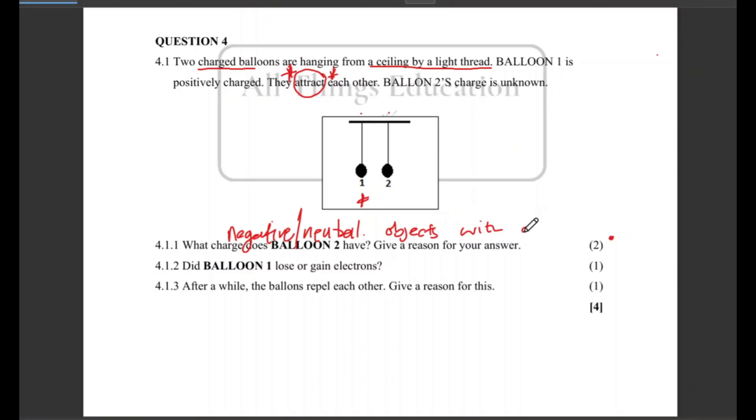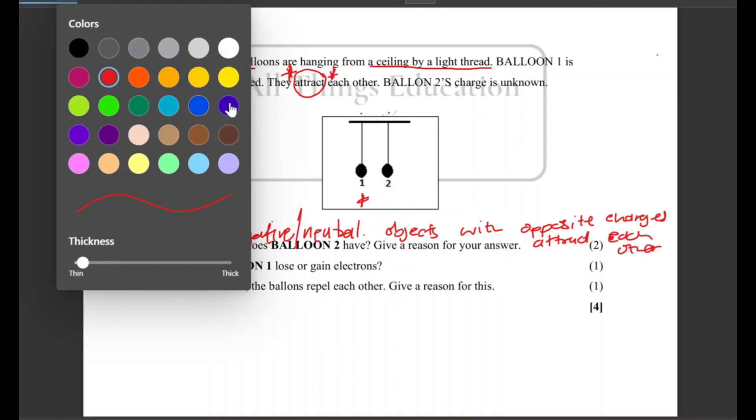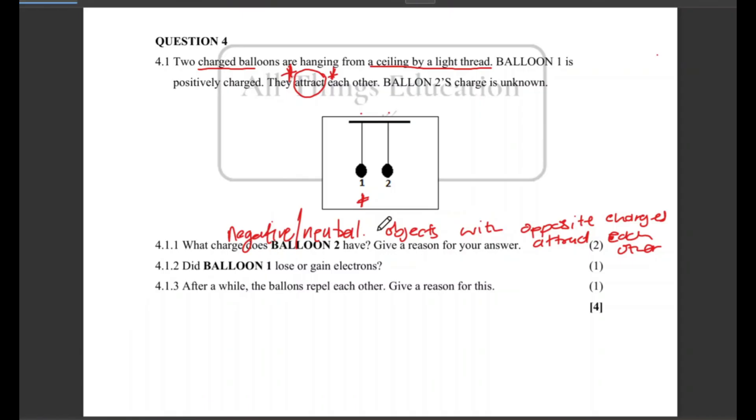Then they ask us to give a reason and the reason is that objects with opposite charges are going to attract each other. So objects with opposite charges, what do they do? They attract each other. So how would this be marked? Let me show you quickly. I'll use this blue. So for the first part you've answered the charge, the second part you've given the reason, so it's one mark each.